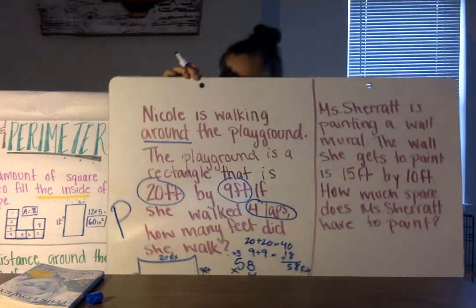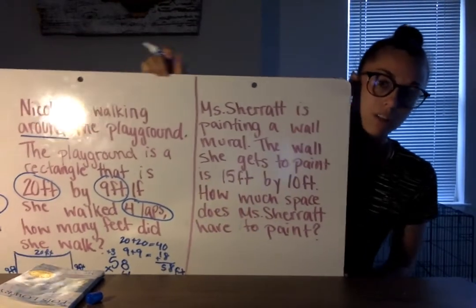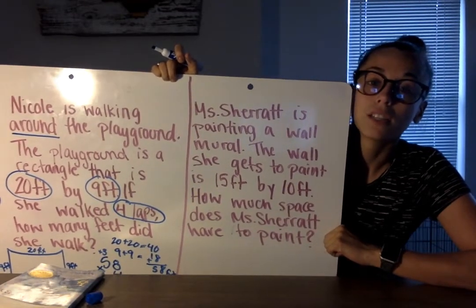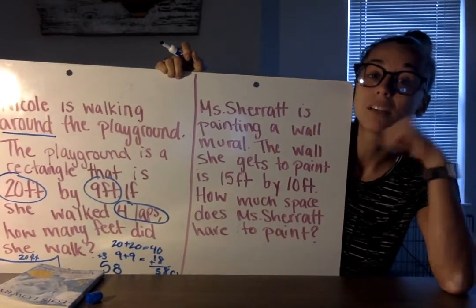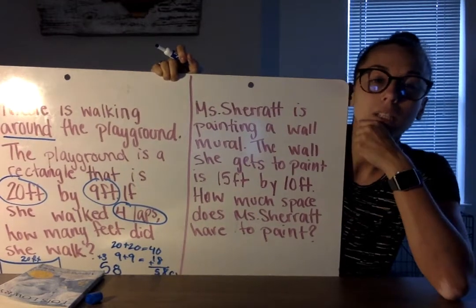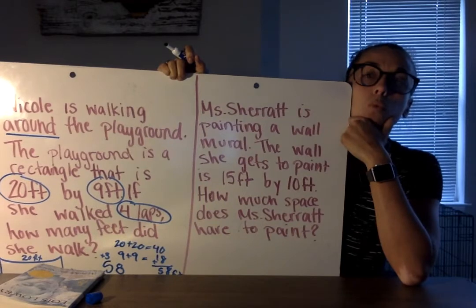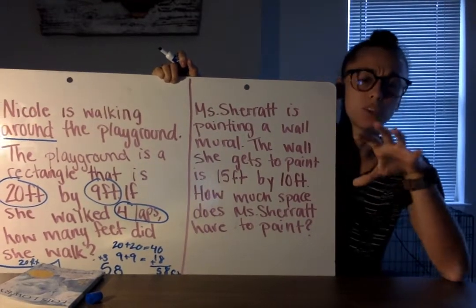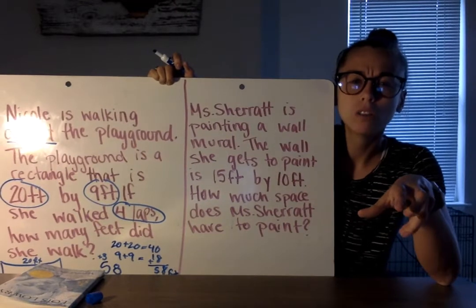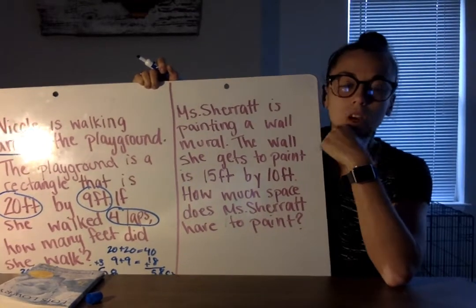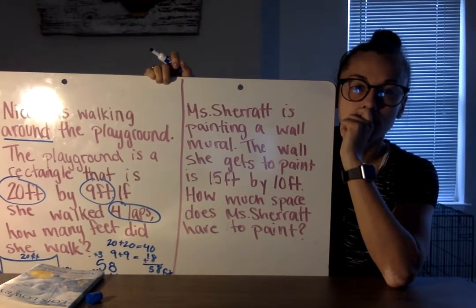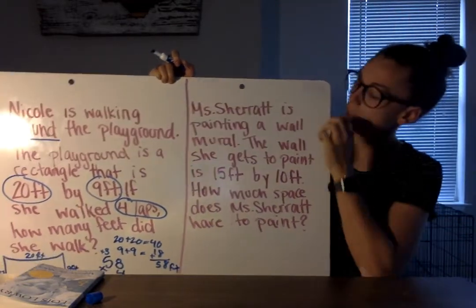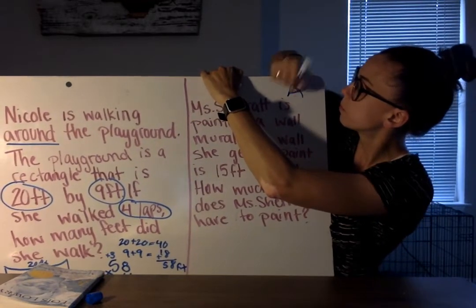Now switching directions: we're talking about Miss Sherritt, our beloved art teacher. Miss Sherritt is painting a wall mural. The wall she gets to paint is 15 feet by 10 feet. How much space does Miss Sherritt have to paint? We need to think: are we doing perimeter or area? If you were painting a mural on a wall, are you focusing just on the outside or on what's on the inside too? You're right — you're painting the whole wall, the whole entire inside portion. So this one is an area problem.